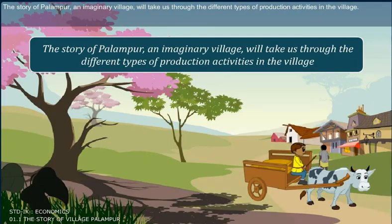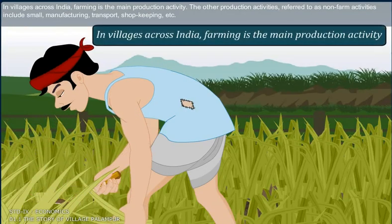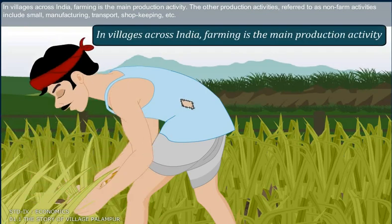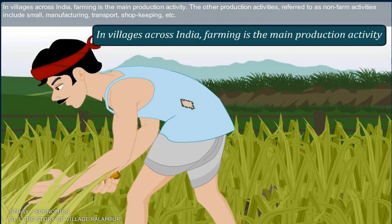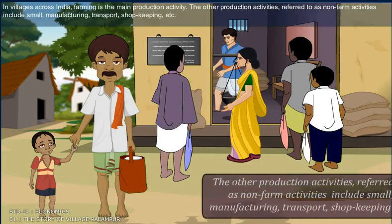The story of Palampur, an imaginary village, will take us through the different types of production activities in the village. In villages across India, farming is the main production activity. The other production activities, referred to as non-farm activities, include small manufacturing, transport, shopkeeping, etc.